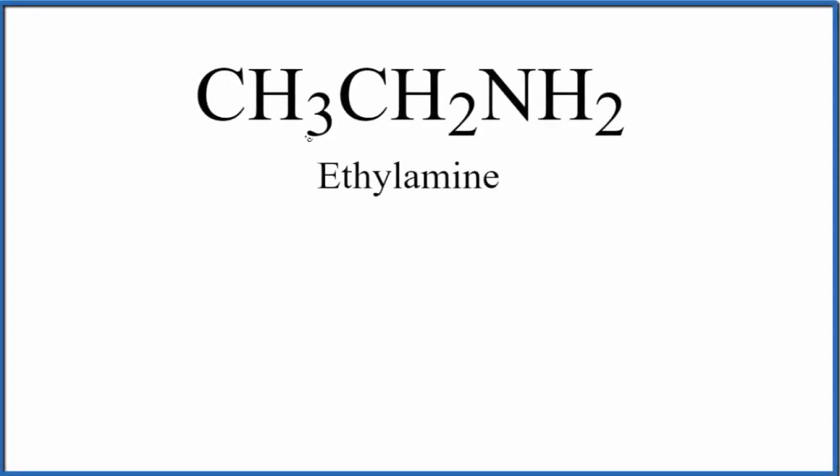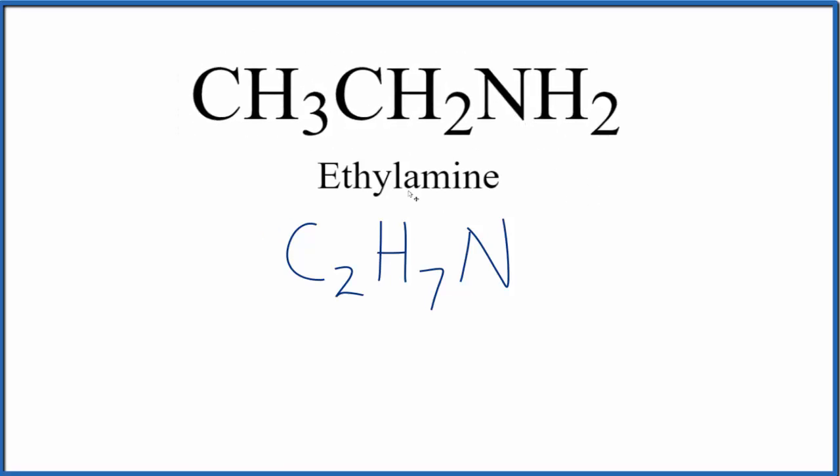Let's write the Lewis structure for CH3CH2NH2. This is ethylamine. You could also condense this down to a formula that would look like this, which has the same number of each type of atom, but if you're given this formula here, you could arrange it differently, has different isomers. So this gives us enough information here to draw the Lewis structure for ethylamine.